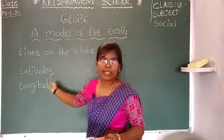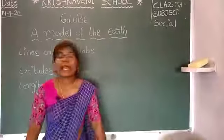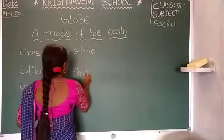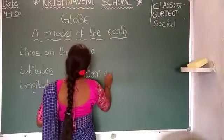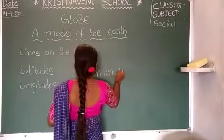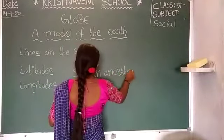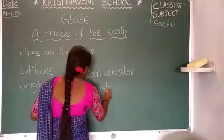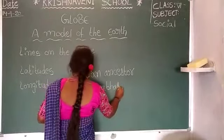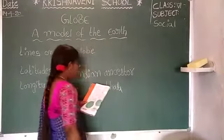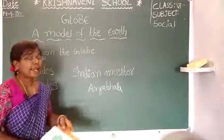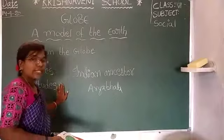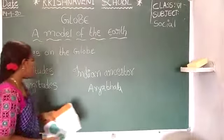Now let us look at the most important lines we are discussing: latitudes and longitudes. Do you know the Indian ancestor? Who is the Indian ancestor? Aryabatta. Do you know the name Aryabatta? Yes, everyone knows the name Aryabatta. Let us see the first thing.